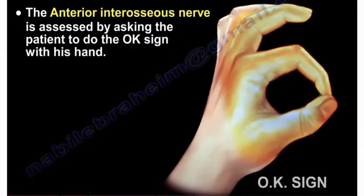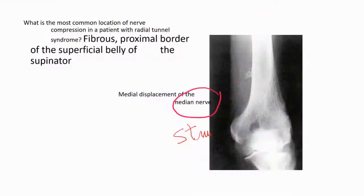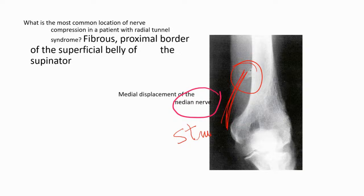When a patient is affected by the anterior interosseous nerve, that person cannot do the OK sign with their hand. There's another problem for the median nerve: a small bony process called the medial epicondyle process of the humerus, which you can see here. That process is attached to the ligament of Struthers, and the ligament of Struthers can affect the median nerve.